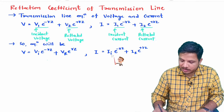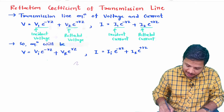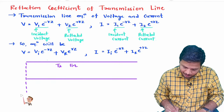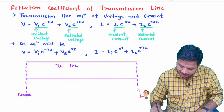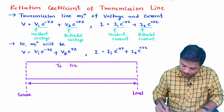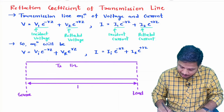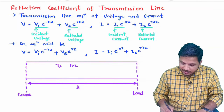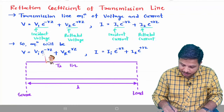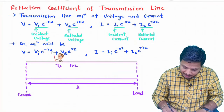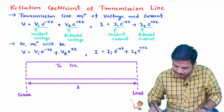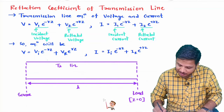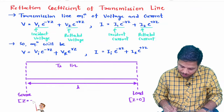Now I will explain these terms with respect to the transmission line. Let me draw the transmission line here. This part is the source side and this part is the load side. Our equations are in terms of z, which is position. At the load side, z = 0.